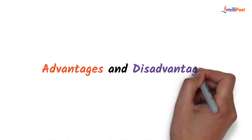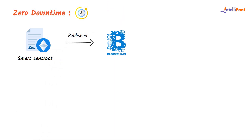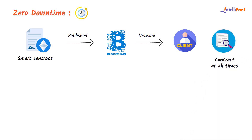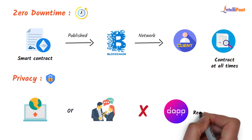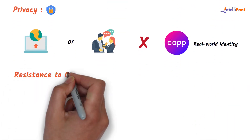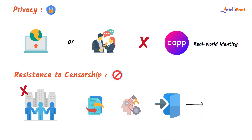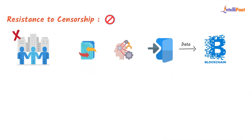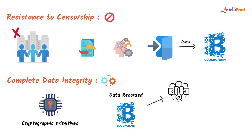Let's talk about the advantages and disadvantages of dApps. Some of the advantages are: Zero downtime — once a smart contract is published on the blockchain, the network as a whole will be able to serve clients who want to engage with the contract at all times. Privacy — to deploy or communicate with a dApp, you don't need to offer a real-world identity. Resistance to censorship — no single organization on the network has the power to prevent users from submitting transactions, establishing dApps, or accessing data from the blockchain. Lastly, we have complete data integrity — thanks to cryptographic primitives, data recorded on the blockchain is unchangeable.